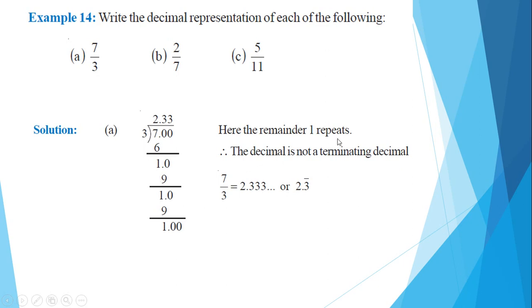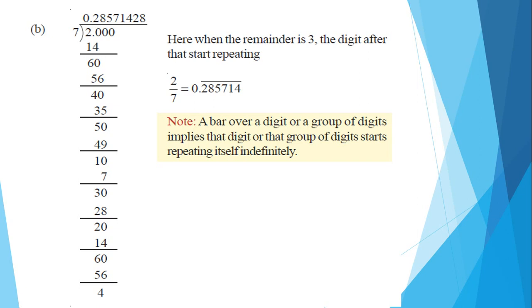The decimal is not a terminating decimal — the digits repeat. For 2 by 7, the digits after a certain point start repeating. The remainder 3 appears again and the digits after that start repeating. This indicates a non-terminating repeating decimal.